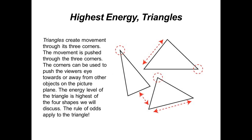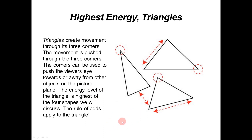The highest energy shape is the triangle. Triangles create movement through their three corners. The movement can be push and pull — pushing towards something, pointing away from it. Corners can be used to pull the viewer's eye towards or away from other objects in the picture plane. The energy level of the triangle is the highest of the four shapes, partly because of the rule of odds.